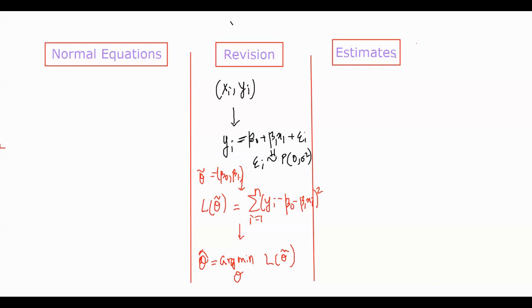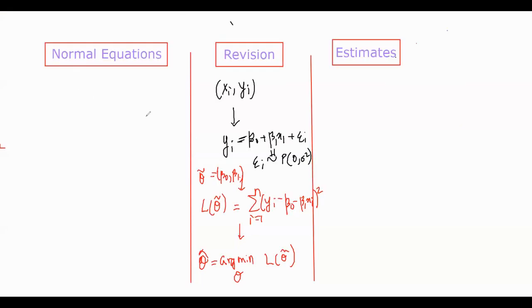So how do we use the theory of least squares to estimate theta_hat? That is the aim of this video, and it is done by something called normal equations. Normal equations give rise to the minimizing equations from the least squares criterion. So what we are trying to minimize is L(theta) = summation of (y_i minus beta0 minus beta1 x_i) squared.